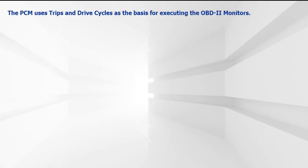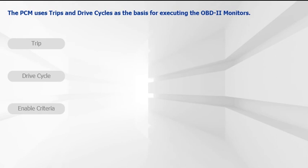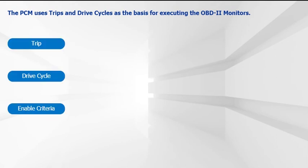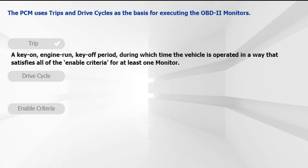The OBD2 system uses trips and drive cycles as the basis for executing diagnostic tests, called monitors, on systems and components. A trip is a term given to a key-on, engine-run, key-off cycle, during which time the vehicle was operated in a way that satisfied all of the enabled criteria for at least one monitor.